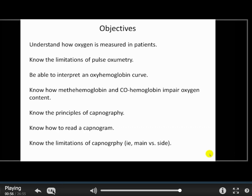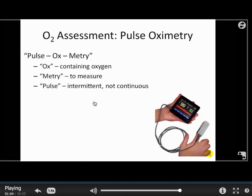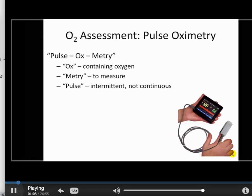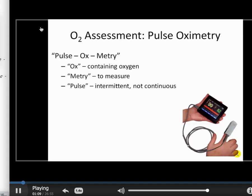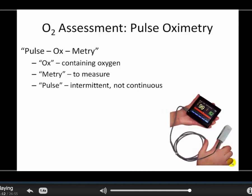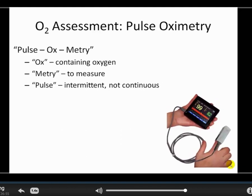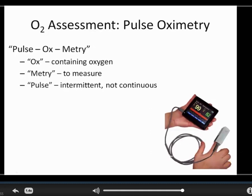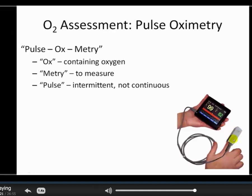We'll talk about capnography for the measurement of CO2, and understanding how and why measurement of CO2 is physiologically important. We have two important gases, oxygen and CO2, and both are measured clinically. Principally, oxygen is measured through pulse oximetry, a common device seen in hospitals and outpatient clinics.